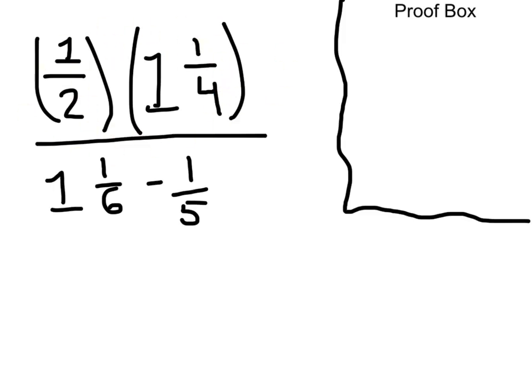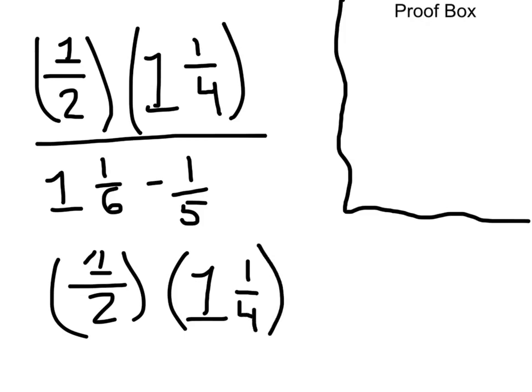Let's first look at the top. On the top, we have 1/2 times 1 and 1/4. Before we can proceed to multiplying this fraction and this mixed number, we have to pause and take a break and see that we can't multiply a fraction by a mixed number.